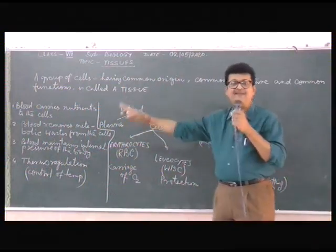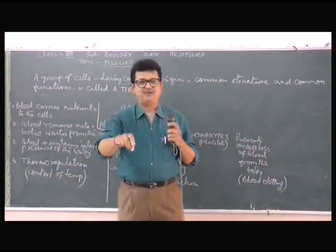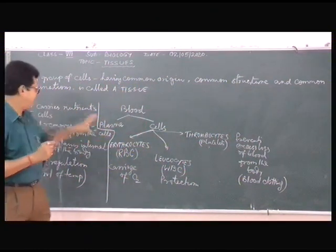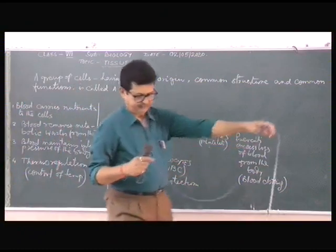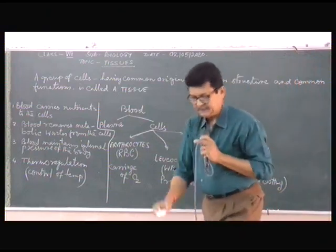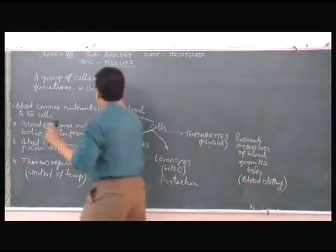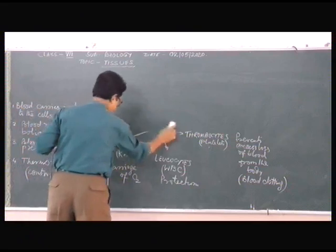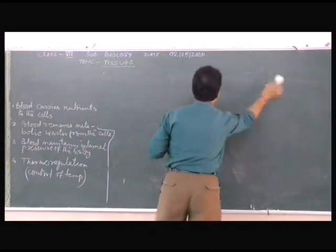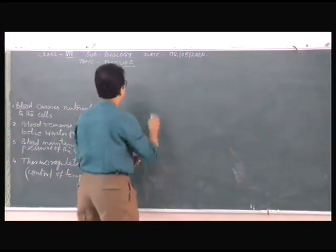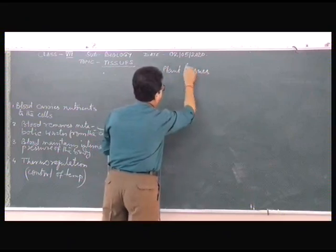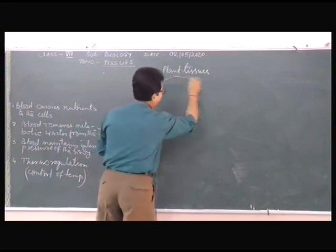The cells of blood have common origin, common structure as animal cells, and common function — these are the common functions of blood as a tissue. But this topic we will continue in the next class. Today we will be doing plant tissue. There are two different types of plant tissue.